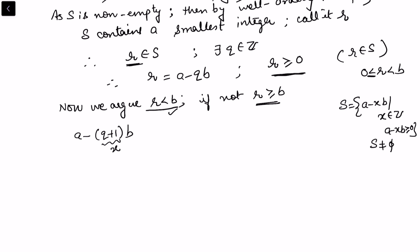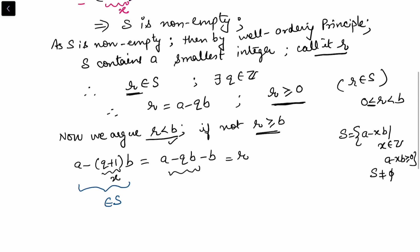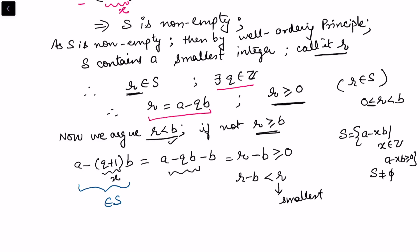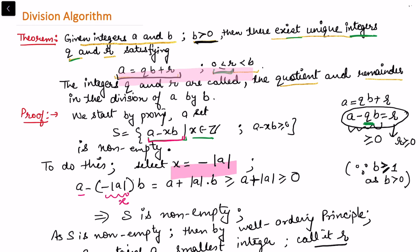With x = q + 1, the element a − (q + 1)b belongs to S. Expanding: a − (q + 1)b = a − qb − b = r − b. Since we assumed r ≥ b, this means r − b ≥ 0, so r − b ∈ S. But r − b < r, which contradicts r being the smallest element of S. Therefore our assumption fails, and we conclude r < b.